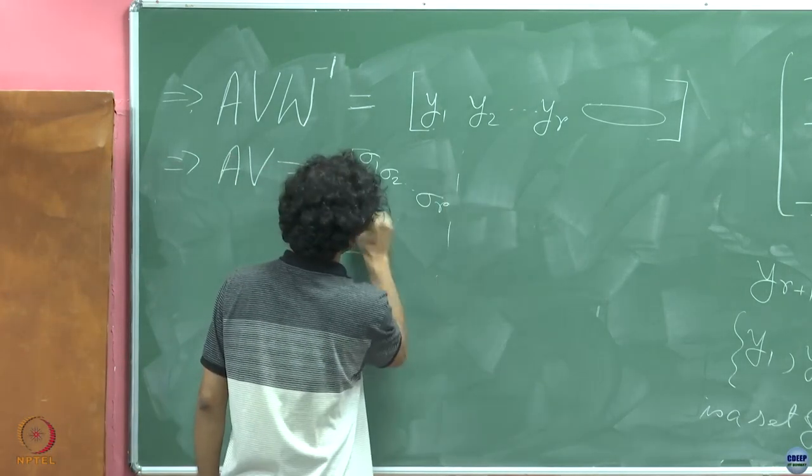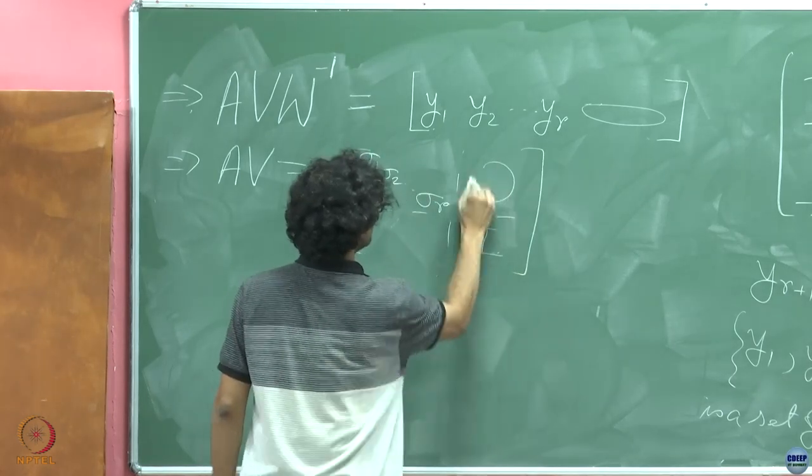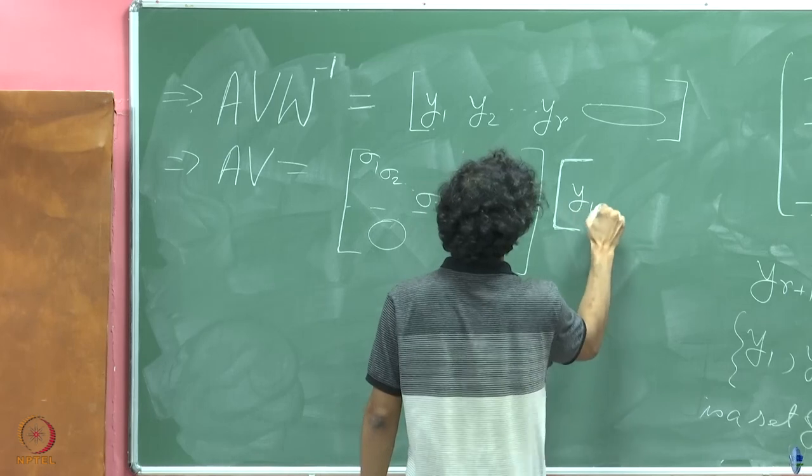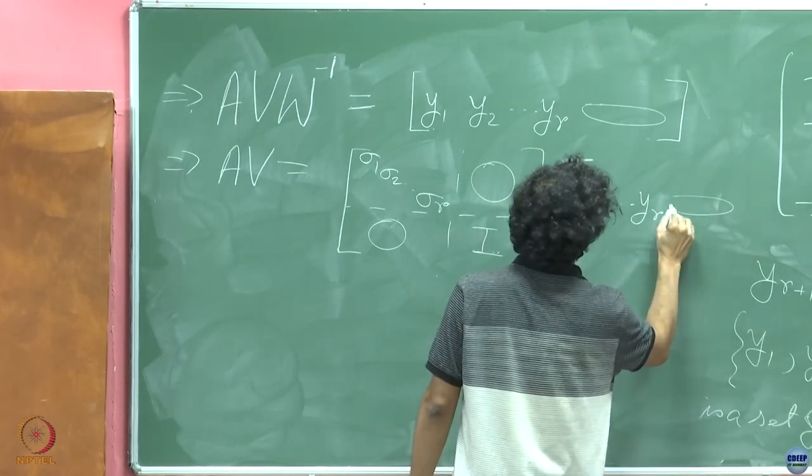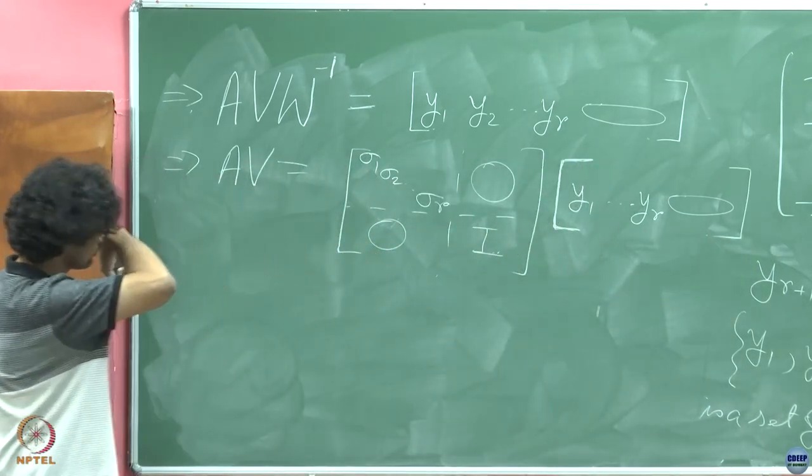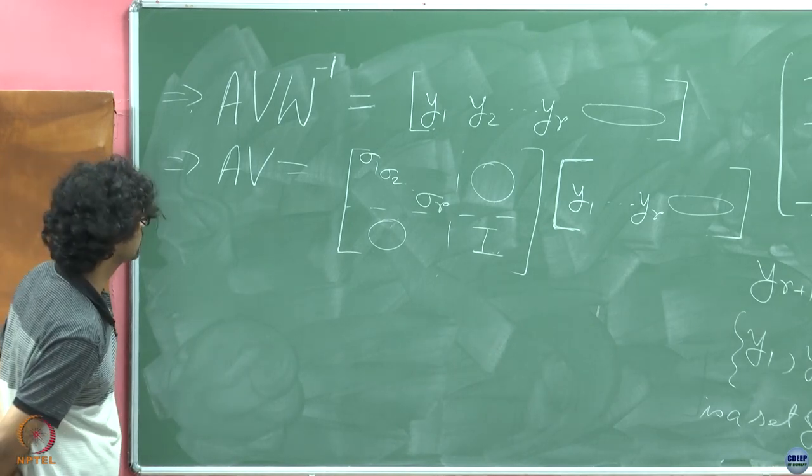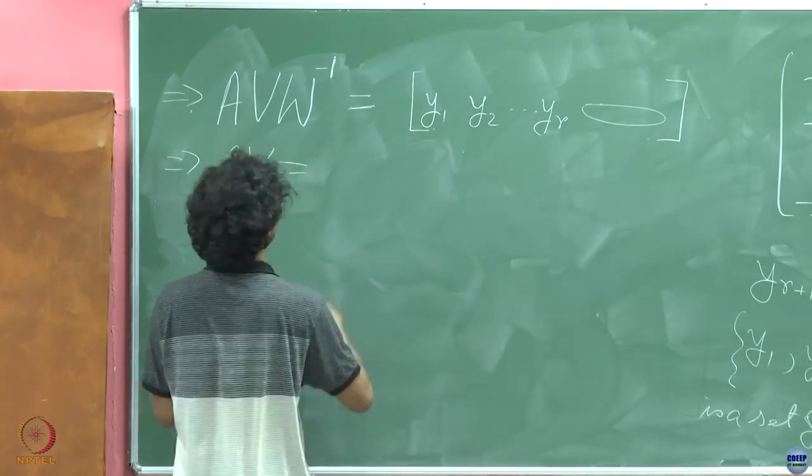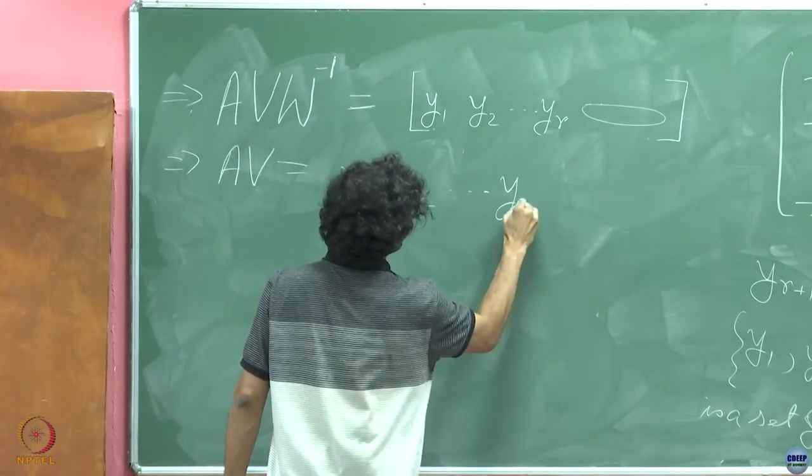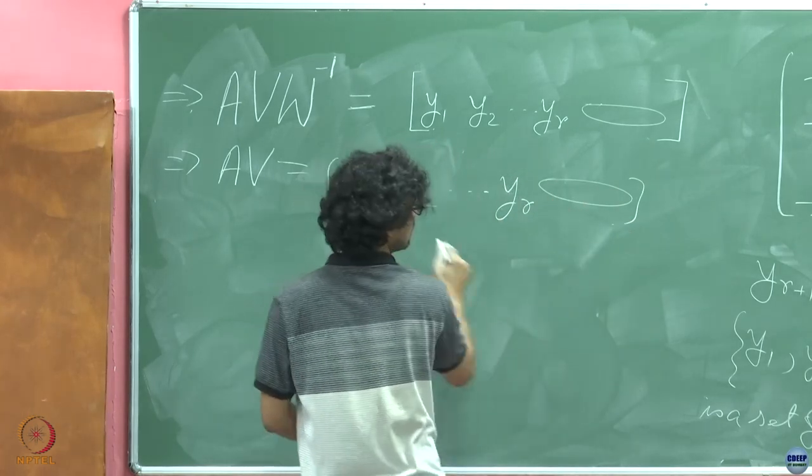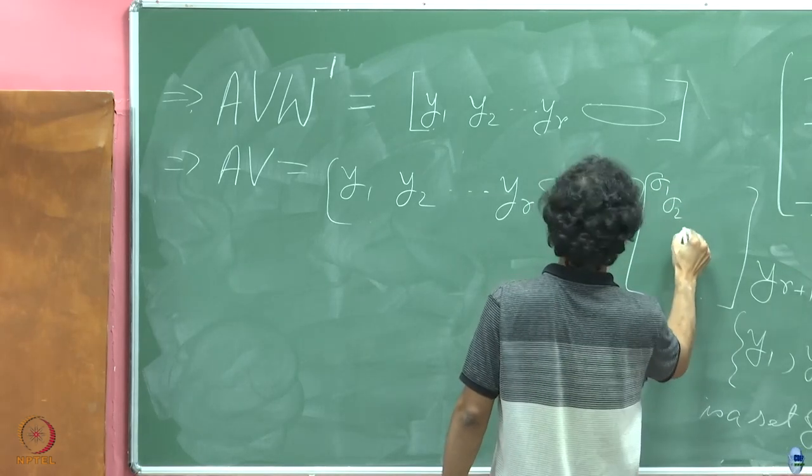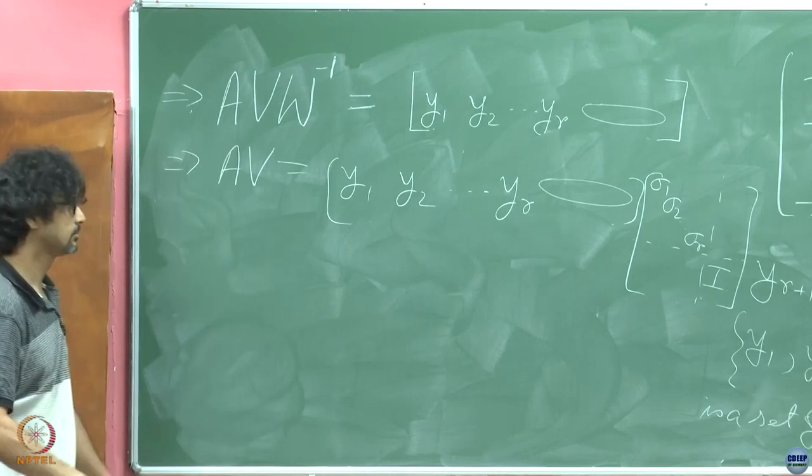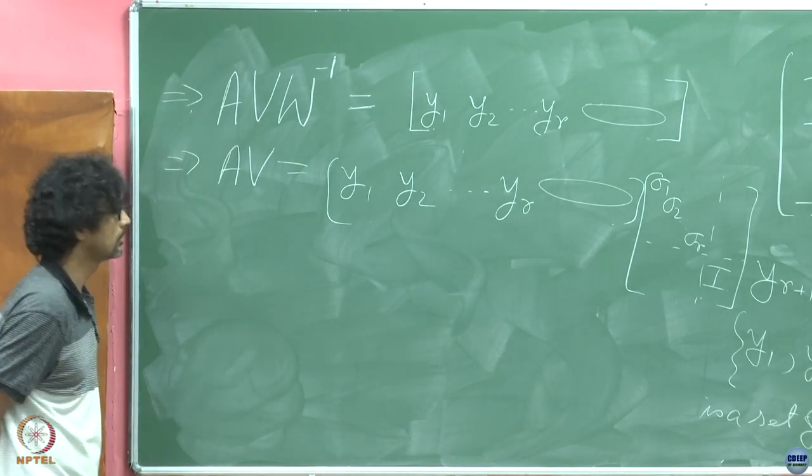And then what is this? Identity, 0, 0, y1, yr, and then another padding with 0s like this. Y1 to yr, it is before the... Ah, sorry, sorry, sorry. Yeah, I am sorry, just a lapse of concentration there. Y1, y2, yr, and then sigma 1, sigma 2 to sigma r, and I.